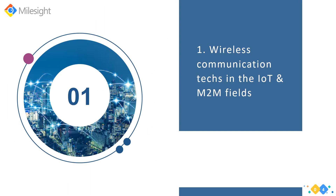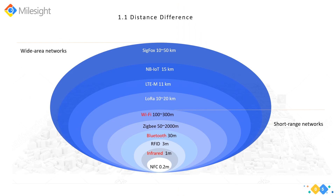There are so many diverse wireless communication technologies in our daily life and work. In the IoT and M2M fields, we can classify them into two types. One is short-range networks such as Wi-Fi, Bluetooth, RFID, and NFC, which have a range of anywhere between a few centimeters to a few hundred meters. The other is wide-area networks, which can work over distances of up to several thousand kilometers over networks of antennas. Standard mobile networks like GSM or GPRS — we can understand these as cellular-based M2M — fall into the wide-area network category.